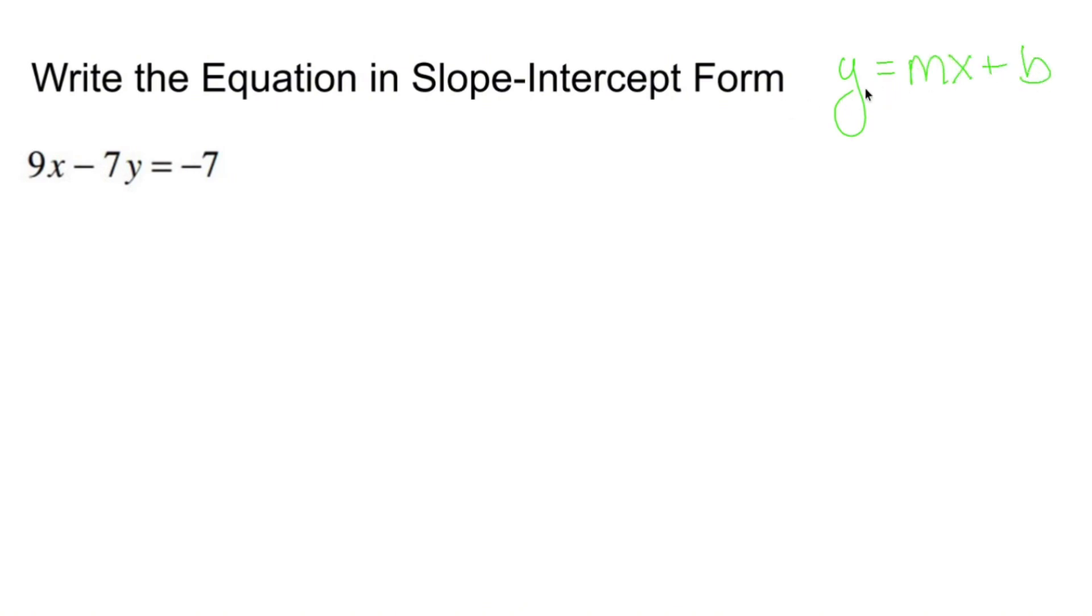So what I have to do is get y all by itself and have my x term first and my number floating around all by itself second. So I have a little bit of work to do. I have to get x over on the right side and I have to eliminate anything in front of y.